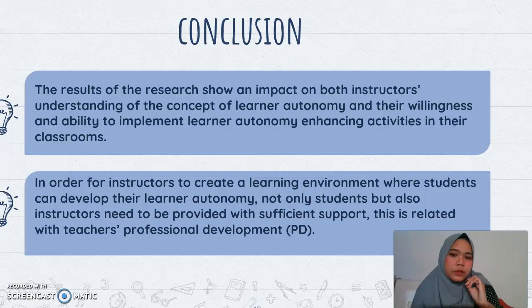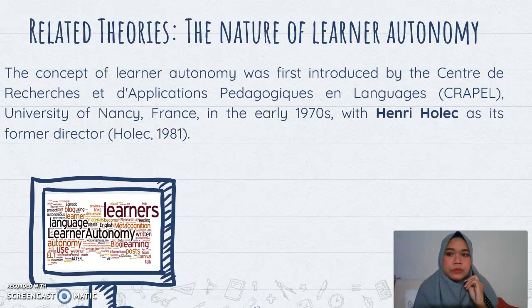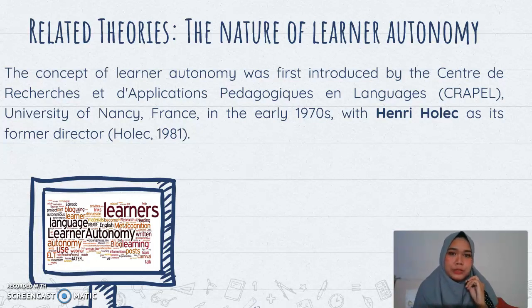In order for instructors to create a learning environment where students can develop their learner autonomy, not only students but also instructors need to be provided with sufficient support. This is related to teacher professional development, or PD. The second explanation in my chapter report is about related theories that explain the nature of learner autonomy, some definitions based on experts, teacher roles in fostering learner autonomy, and teacher professional development in enhancing learner autonomy.